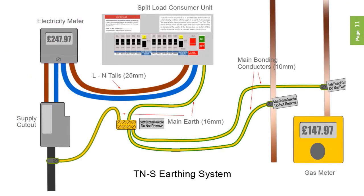TNS means terra-neutral separate, which means earth and neutral conductors are separate coming into the installation. The outer sheathing of the supply cable — either steel wire armour or often lead — is used as the incoming earth conductor. This is more often found on old installations, and is easily identifiable by the earth connection being made directly onto the cable sheath.